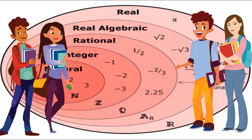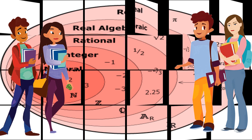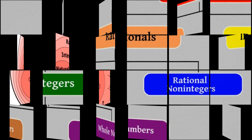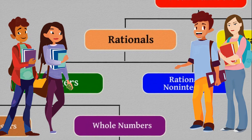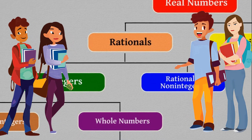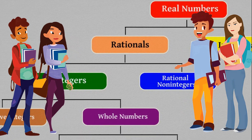The real numbers are a set of numbers containing all the rational numbers and all the irrational numbers. The real numbers are all numbers on the number line. Here is a flowchart of the number system.